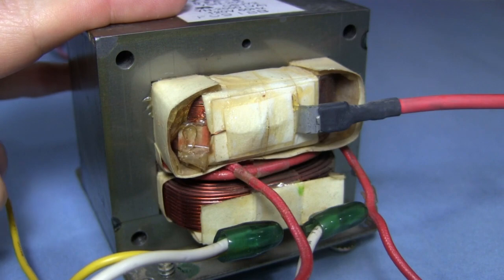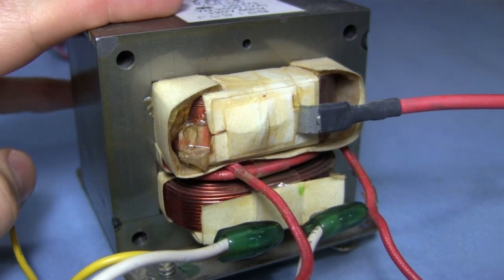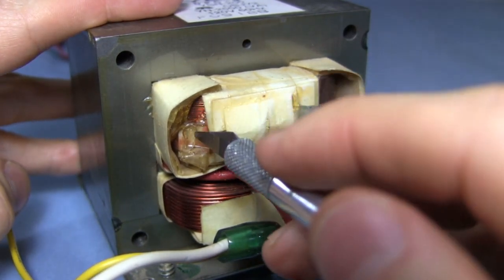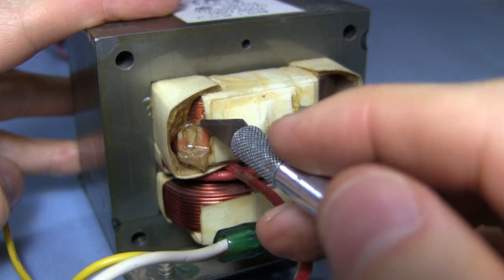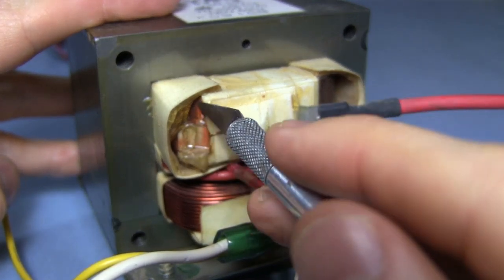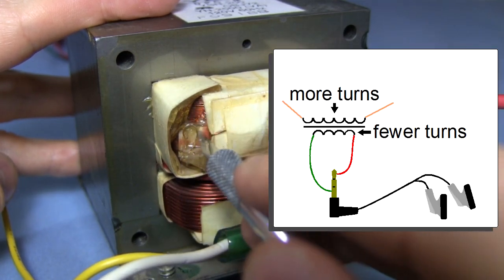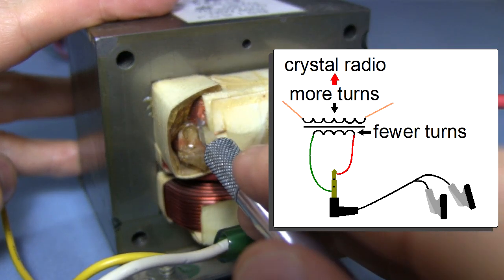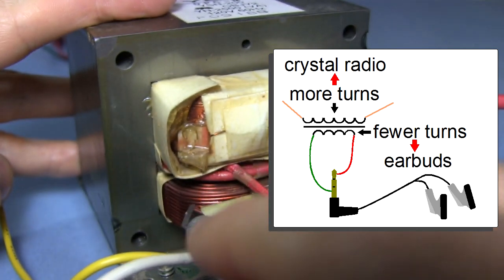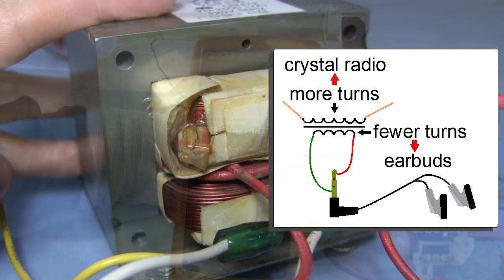This transformer is an example of one where I don't know the voltages. But instead I can go from the number of turns of wires on the coils. This coil right here has a lot of turns, a lot more than this coil right here. So the coil with the most turns, you connect to the crystal radio parts. And the coil with the fewer turns, you connect to the earbuds.